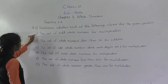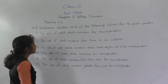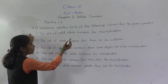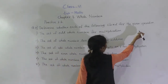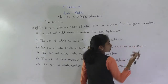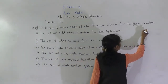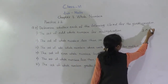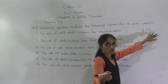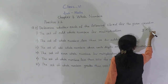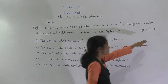In this first question, the set of odd whole numbers for multiplication. Which are the odd numbers? 1, 3, 5, 7. Take 3 and 5 — both are odd whole numbers. 3 multiplied by 5 is 15, and 15 is an odd whole number. Yes.